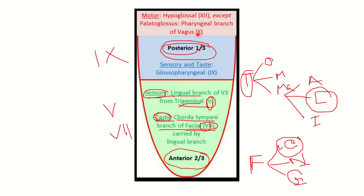The extreme posterior part of the tongue — just behind the posterior one-third — has both sensations carried out by the vagus nerve. For motor supply, all the muscles of the tongue are supplied by the hypoglossal nerve except the palatoglossus, and the palatoglossus is supplied by the vagus nerve.